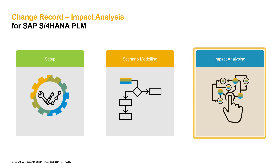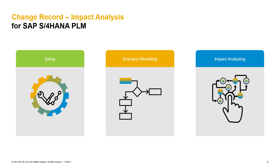Once our impact model is available, we can execute a model on the change record item level. With this, we can analyze which of the modeled objects are impacted by our change. During impact analysis, we can also switch between different scenarios. Let's now jump into the system to have a closer look at how the impact analysis is working.